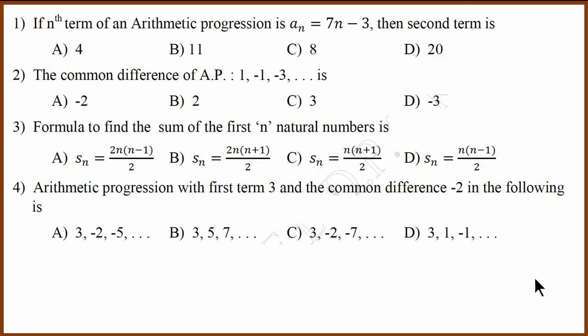First four questions are arithmetic progression questions. What is the first question? Nth term is given 7n minus 3. What is the second term? If there are questions, we have to substitute the value of n with 2. If you substitute the value of n with 2, you will get answer 11. Second question. So they have given a common difference question. AP 1 minus 1 minus 3. Second term minus first term is AP. That will be minus 2.